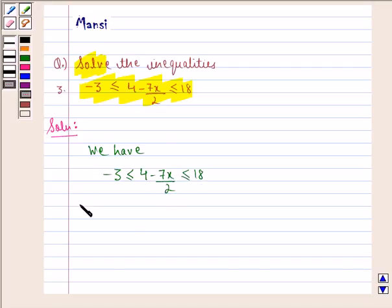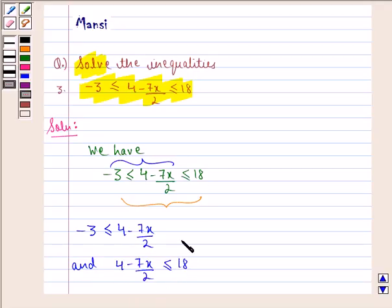This statement is equivalent to two inequalities. They are minus 3 is less than equal to 4 minus 7x by 2, this we get from the first part, and 4 minus 7x by 2 is less than equal to 18. This we get from the second part.